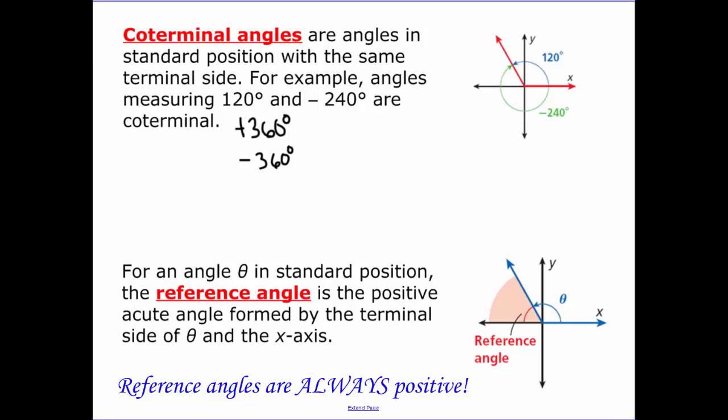Now a reference angle. A reference angle is the positive acute angle formed from the terminal side to the x-axis. So they're always positive. So it's wherever your terminal side is, whatever angle gets you back to the x-axis. And they are always acute, which means less than 90 degrees.